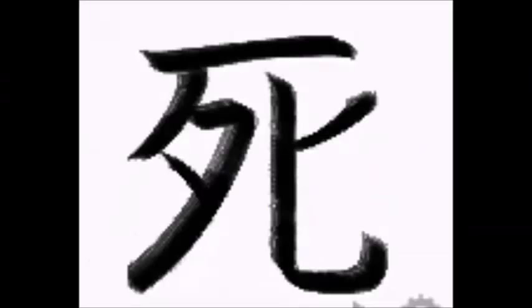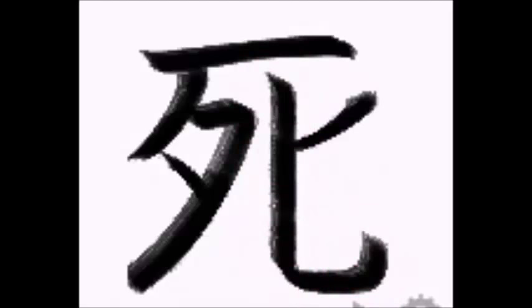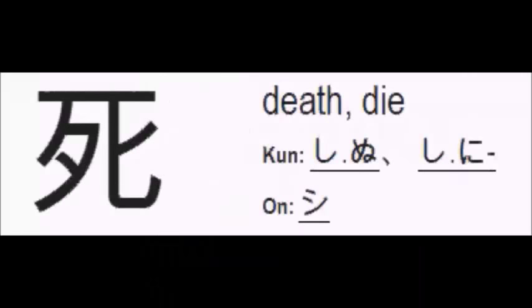The next kanji means to die. This kanji has 6 strokes: 1, 2, 3, 4, 5 and 6. The Kunyomi readings are Shi, Shi of Shina, and Shi of Shini, and the Onyomi reading is Shi. The meanings associated with this kanji are Death and Die.